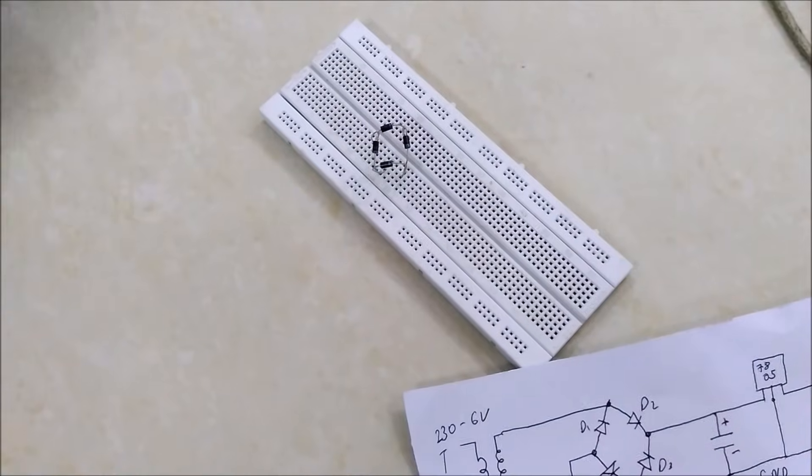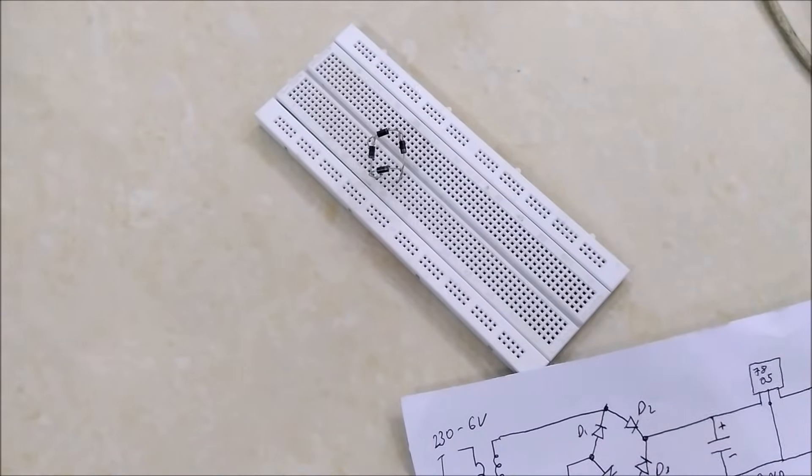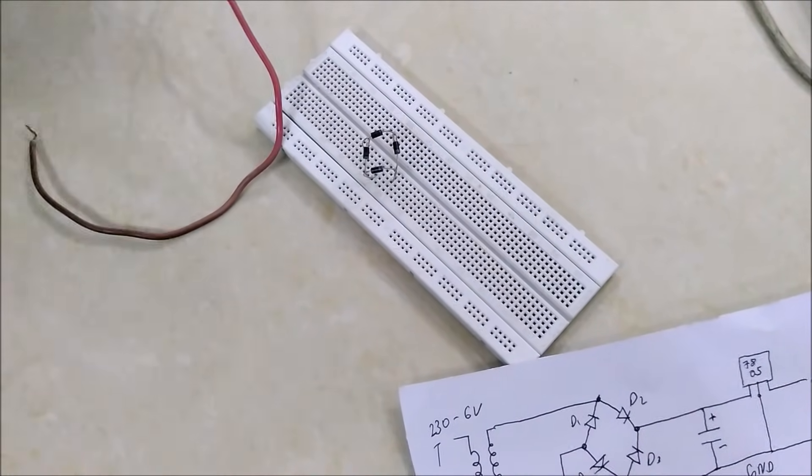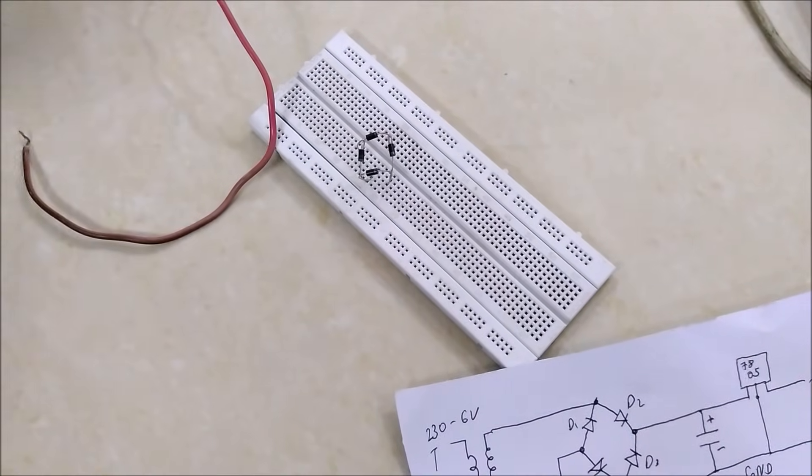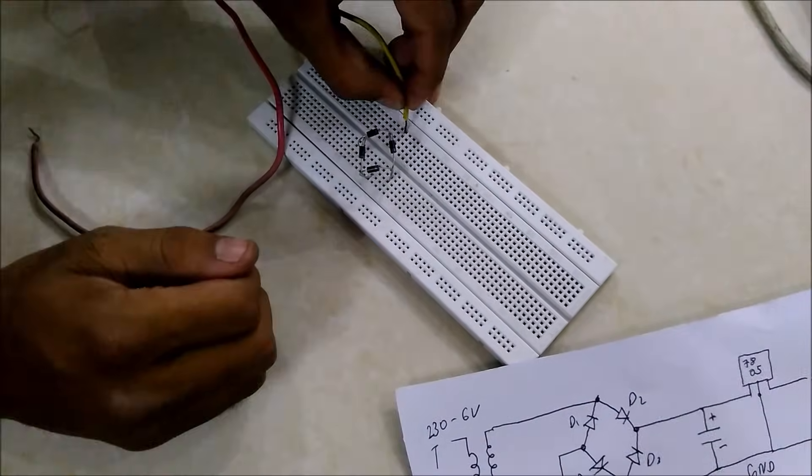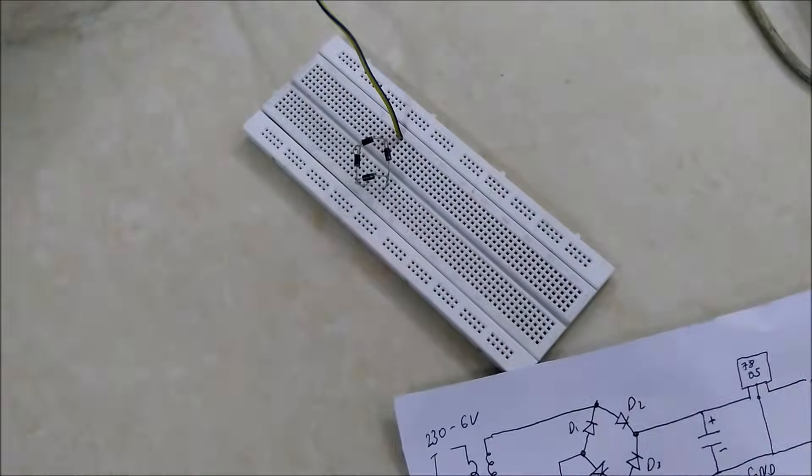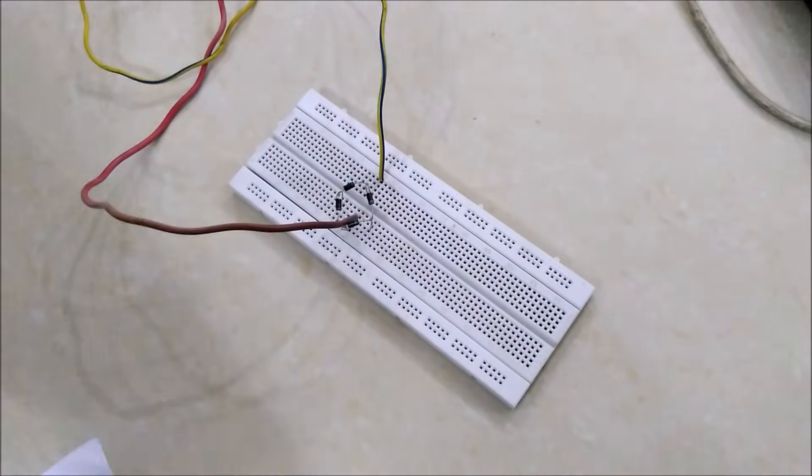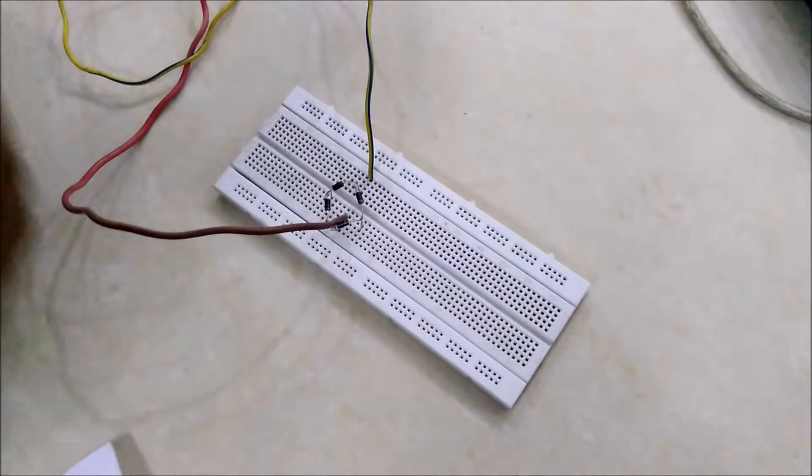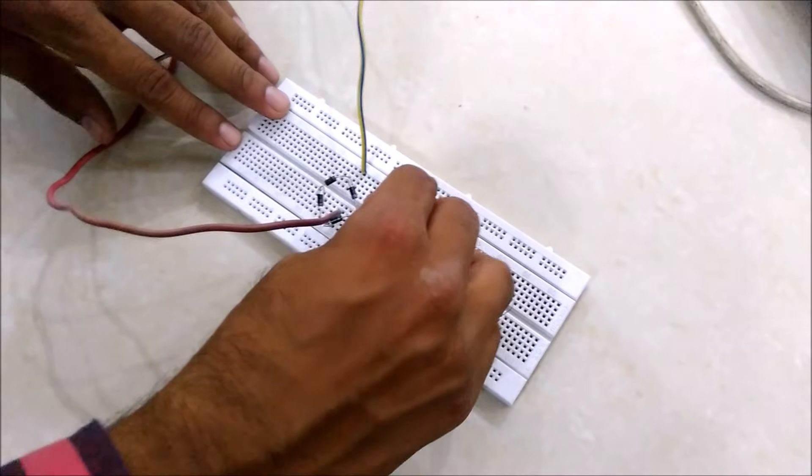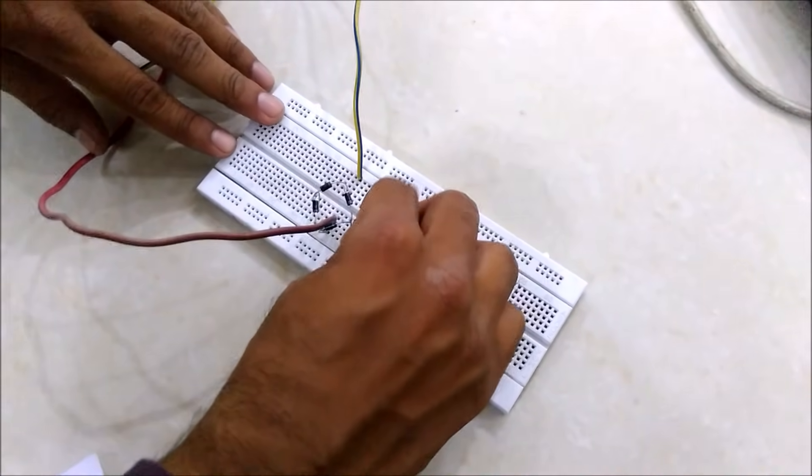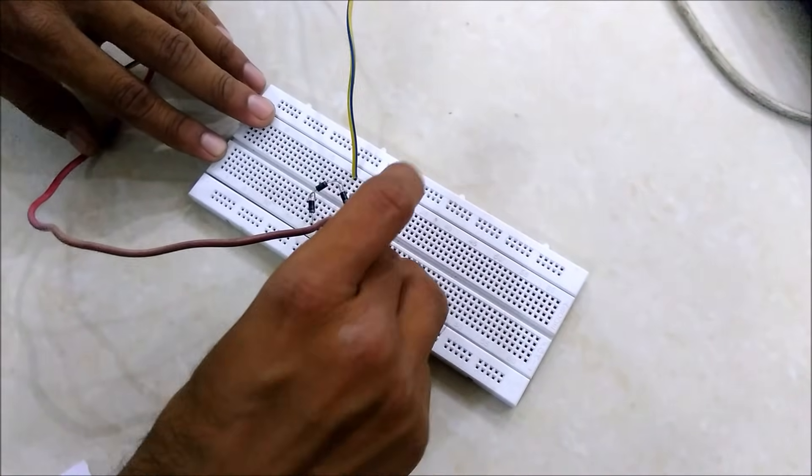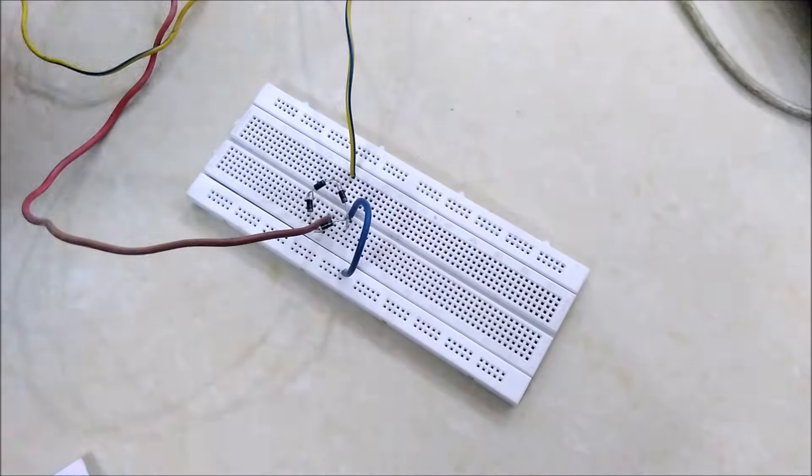Now we'll connect the input wires which will come from the transformer. Now we'll connect the output with the capacitor. This is the output wire.